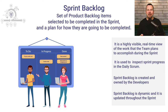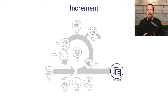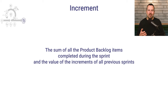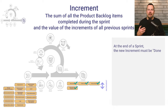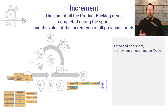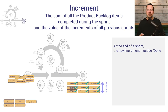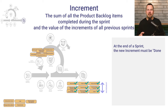The sprint backlog is dynamic and updated throughout the sprint as more is learned. The last artifact in Scrum is the increment. The increment is the sum of all the product backlog items completed during a sprint and the value of the increments of all previous sprints — basically, all functional work completed since the start of the project. At the end of a sprint, the new increment must be in a done status, which means it must be in a usable condition and meet the Scrum team's definition of done.